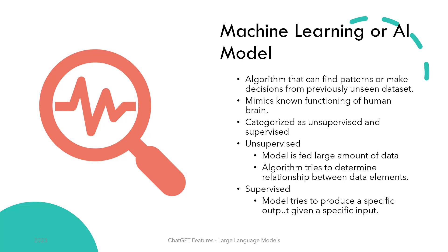In unsupervised learning, the model is fed a large amount of data and it tries to find relationships between the elements of the data. Since we are in the context of language, this type of learning would result in the model deriving relationships between words, sentences, and concepts.